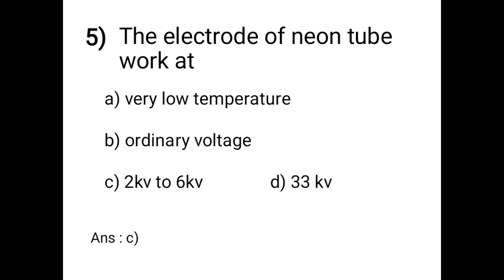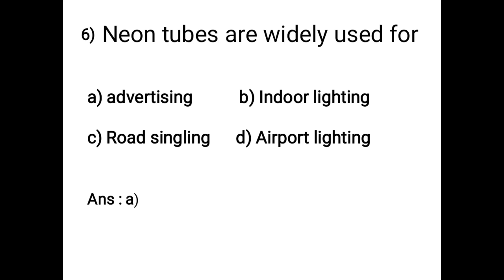Question 5: The electrode of a neon tube works at: A - very low temperature, B - ordinary, C - 2 kV to 6 kV, D - 33 kV. The answer is option C: the electrode of a neon tube works at 2 kV to 6 kV.